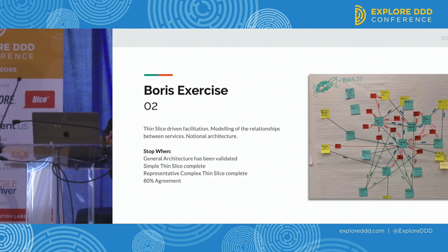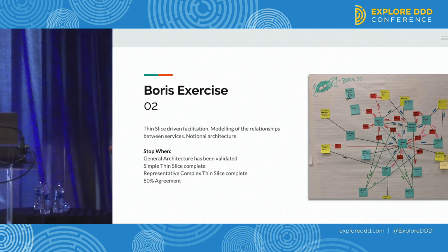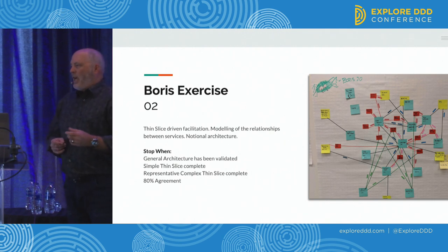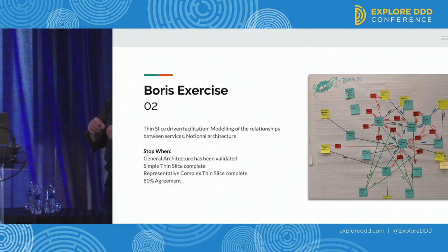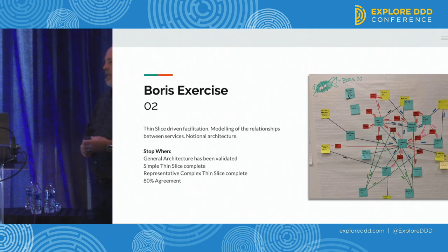Q: When you do the thin slice, does it have anything to do with the event storm you did before, or do you start from something different? A: Good question. Often the thin slice is driven out through the event storm. Originally we looked through event storming for that big pain point and said that's what we need to do — but it turned out that was actually really hard because there was so much complexity. So usually now we start with the happy path first — the easiest thing we could use to exercise things — and the second one is the complex pain points, something generated through the event storming. A particular business person will know 'this is my Achilles' heel, can we model that first?' And the event storming certainly informs it.